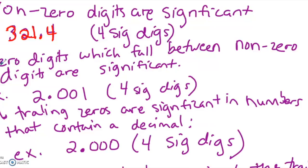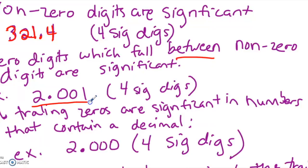The second way to determine significant digits is that zero digits which fall between non-zero digits are significant. For example, 2.001 — the two zeros are in between non-zero digits, so each digit is significant, giving four significant digits.